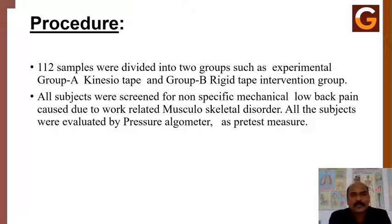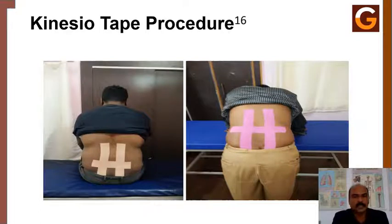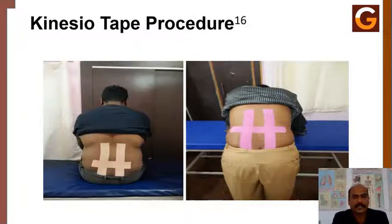The 112 samples were divided into two groups: experimental Group A (kinesio taping) and Group B (rigid taping). All subjects were screened for non-specific mechanical low back pain caused by work-related musculoskeletal disorder, and all were evaluated by pain pressure threshold using the algometer. For kinesio tape application, two vertical I-strips were used to align the iliocostalis or erector spinae muscles, and a horizontal strip was applied to the maximal pain region including the interspinous or quadratus lumborum region.